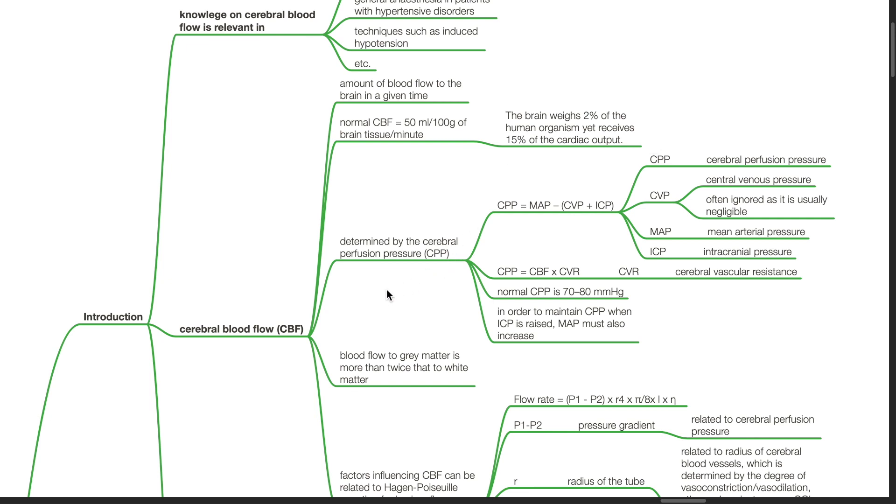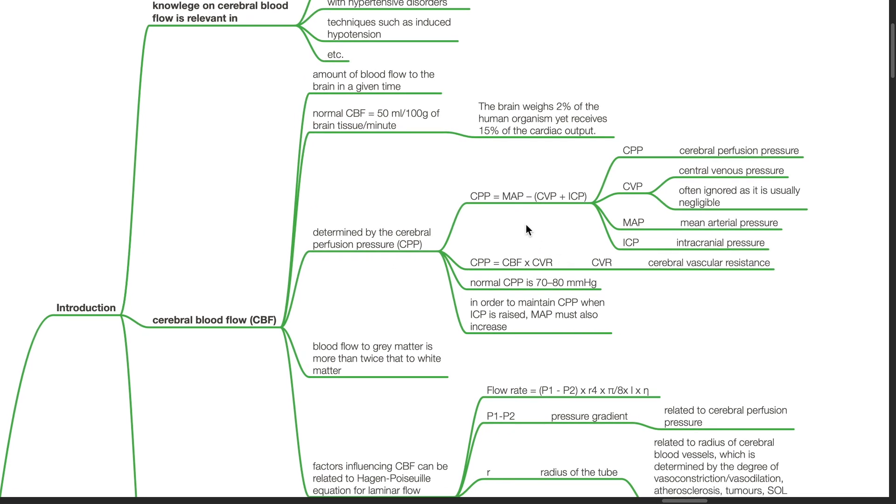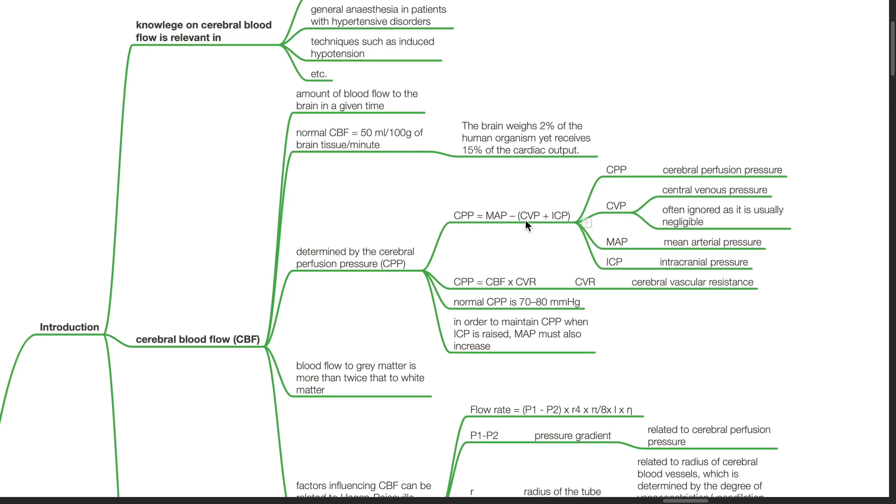CBF is determined by the cerebral perfusion pressure, CPP, where CPP equals MAP minus CVP plus ICP. CPP stands for cerebral perfusion pressure, CVP central venous pressure. This is often ignored as it is usually negligible. MAP, mean arterial pressure, and ICP stands for intracranial pressure.